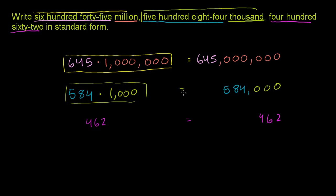Now our number is all of these combined: 645,000,000 and 584,000 and 462. One way to think about it is you could add these three numbers. If we add them, we get 645,584,462.